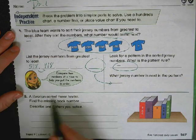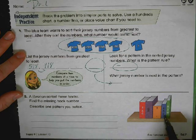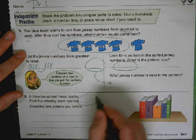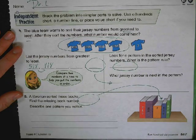A librarian sorted these books. Find the missing book number. So you have 860, 850, 8 something, 830, 820. What's missing? Right here. And describe one pattern you notice.